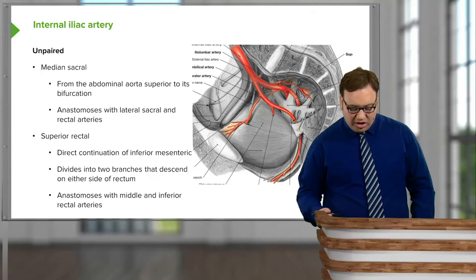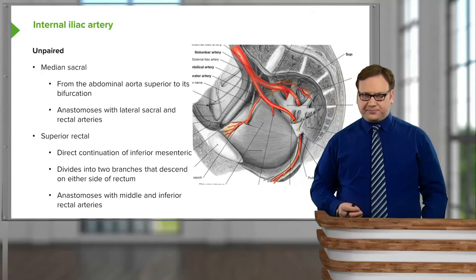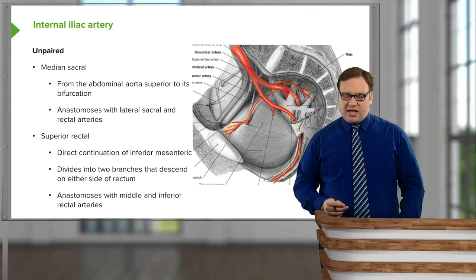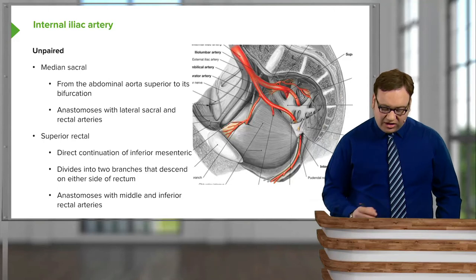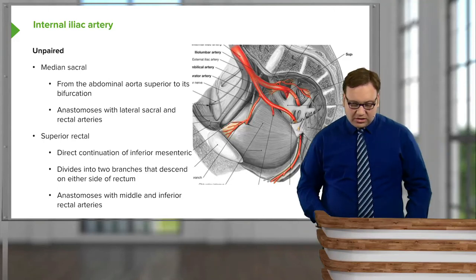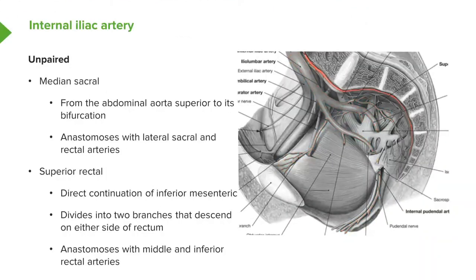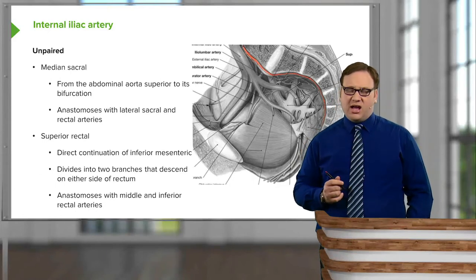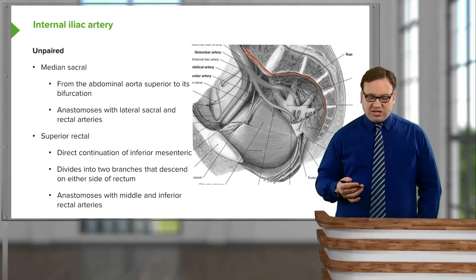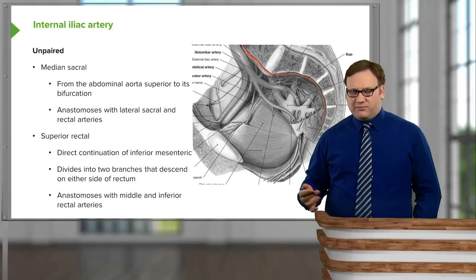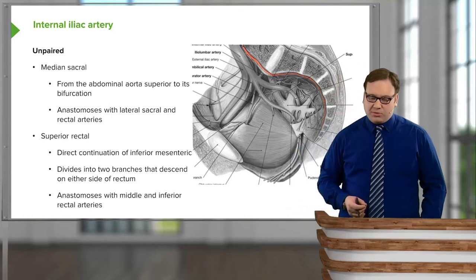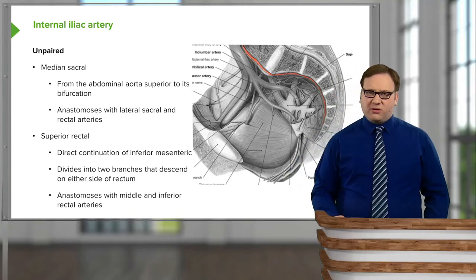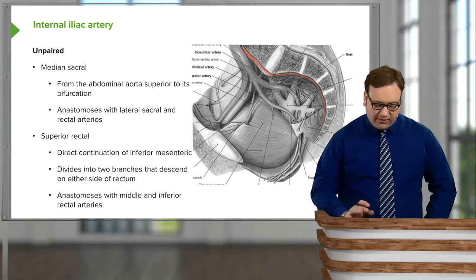Within the pelvis we also have unpaired arteries that don't come from the internal iliac. We have a median sacral artery running directly down from the aorta — the name median indicating it is unpaired. We also have a superior rectal artery, which is the direct continuation of the inferior mesenteric artery into the pelvis. It divides into numerous branches descending either side of the rectum and anastomoses with middle and inferior rectal arteries.